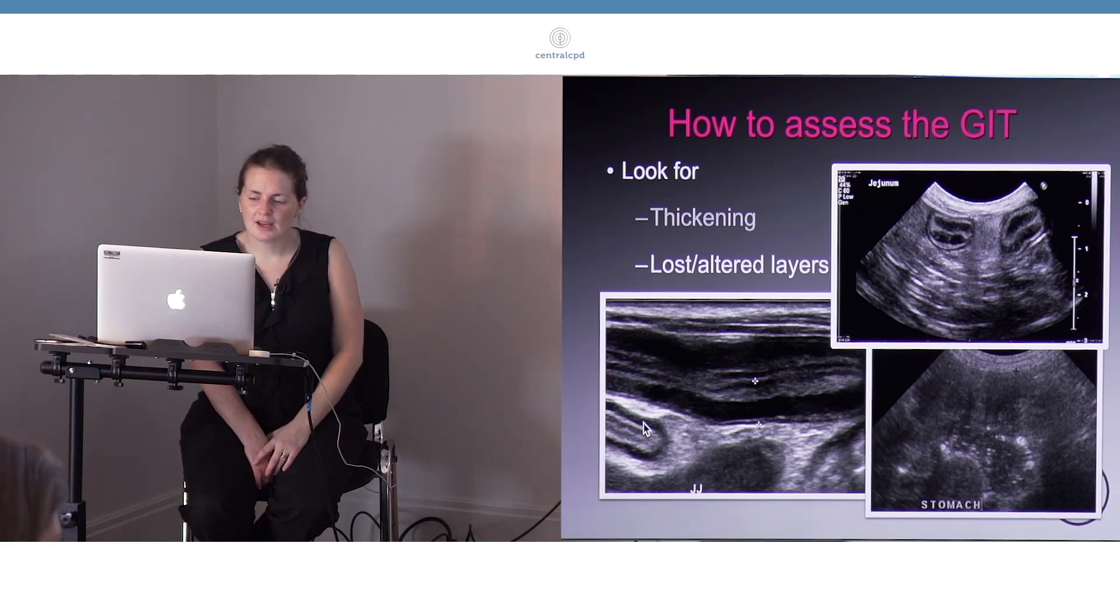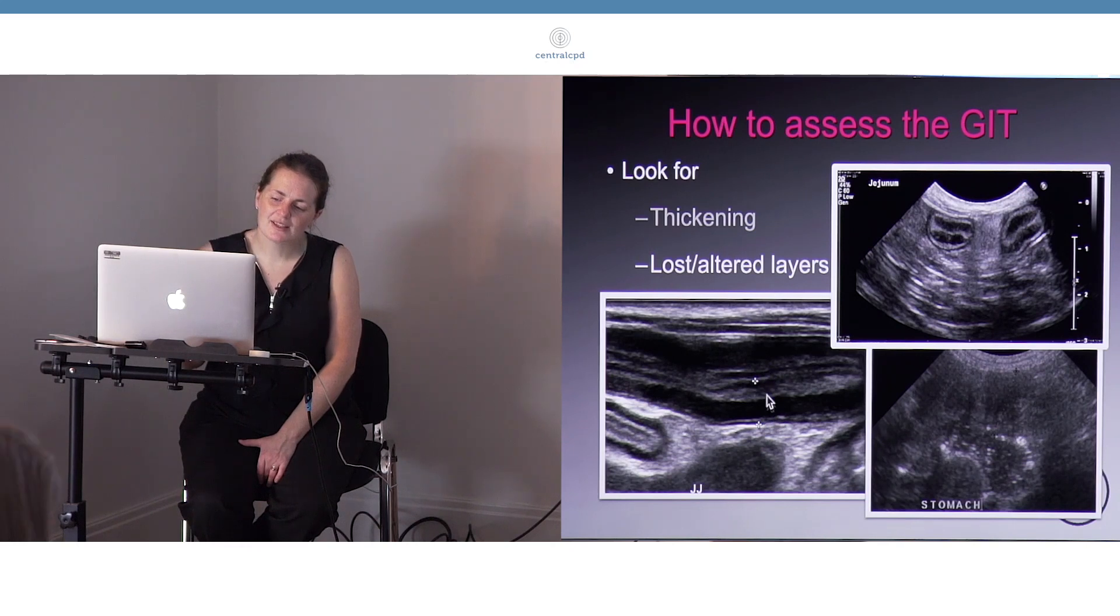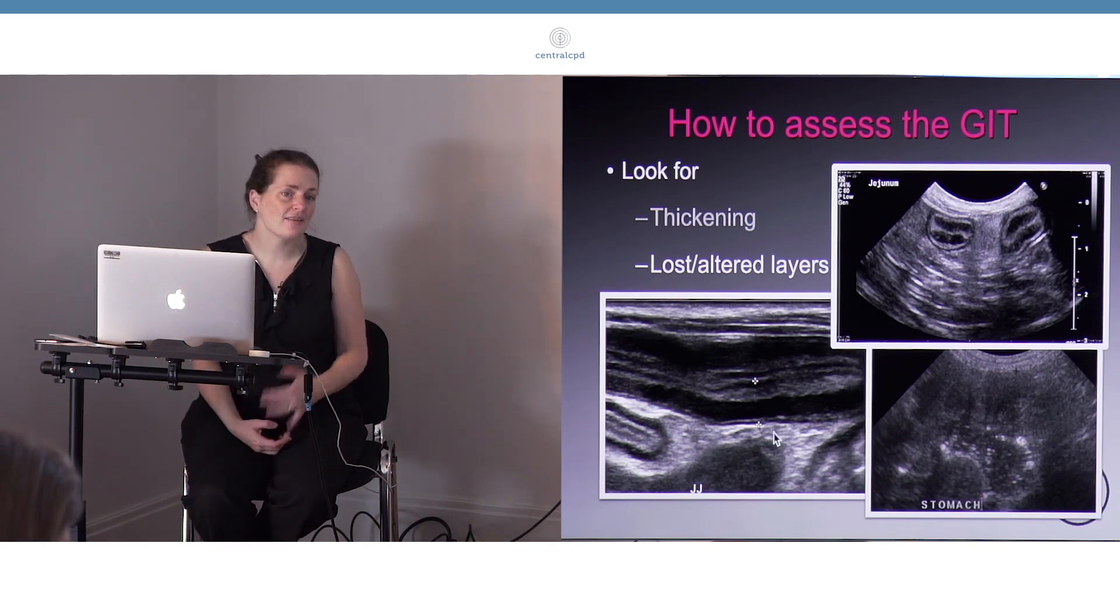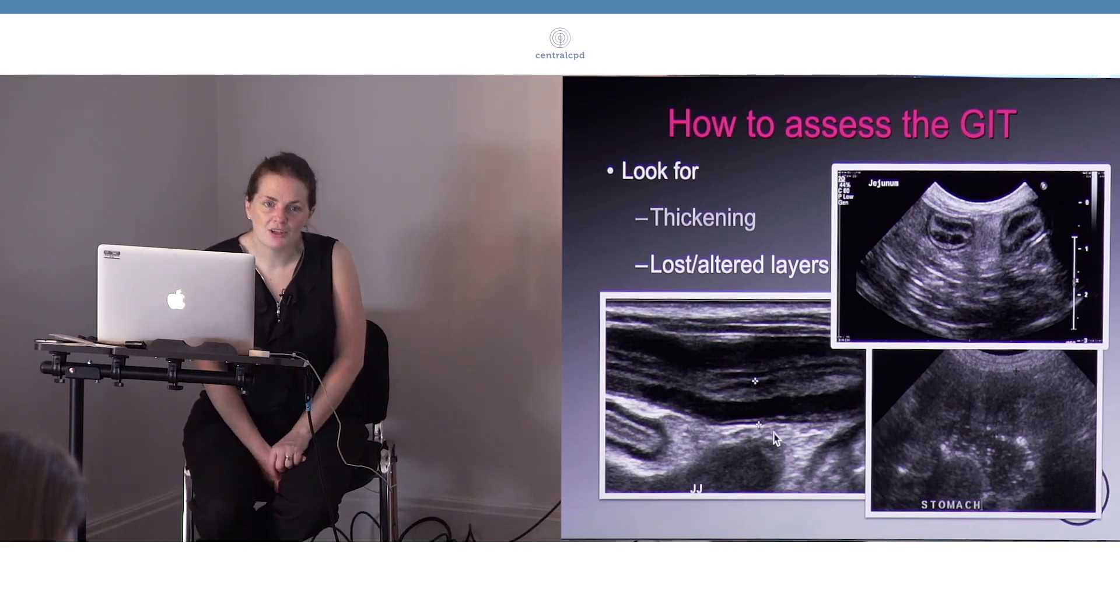So altering the distribution of the layers for sure would be a feature that we'd see with a lot of diseases. This area where we get increased numbers of layers is something that's being increasingly recognized. I think as our ultrasound machines have got better, there's been a bit of a flurry of papers publishing on these extra lines that we see.